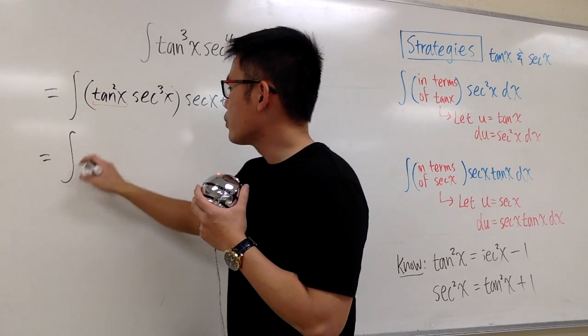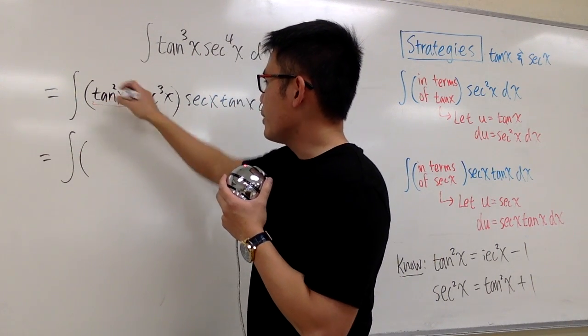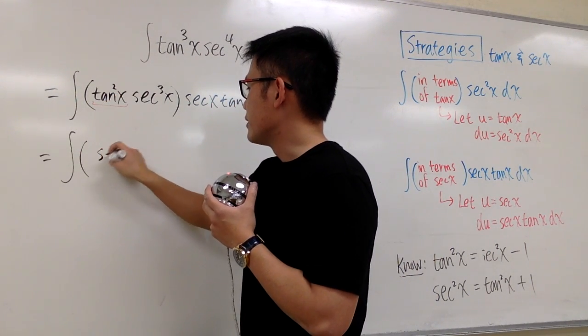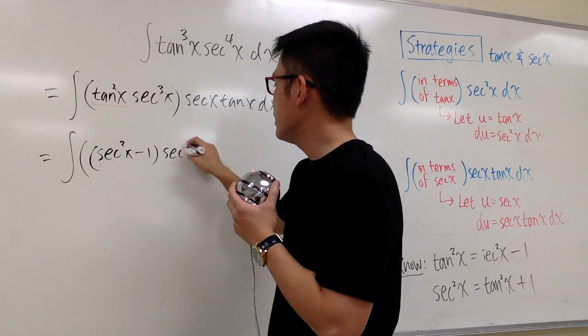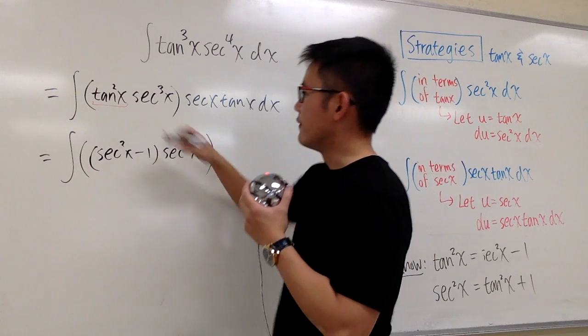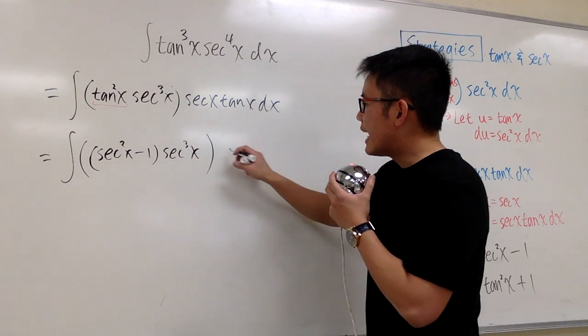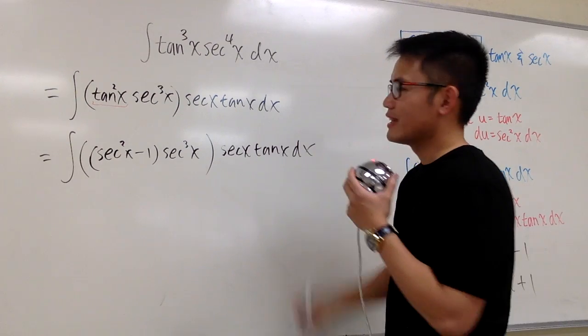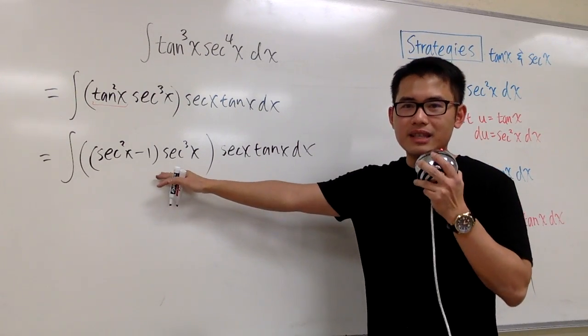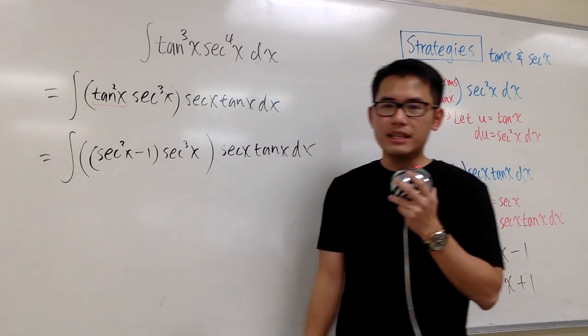I'm just going to rewrite this. This will be the integral. Tangent squared x is the same as secant squared x minus 1. And then we have secant to the 3rd power x. That's the first part. And then on the side, we have secant x tangent x dx. An easy enough expression in terms of secant x.